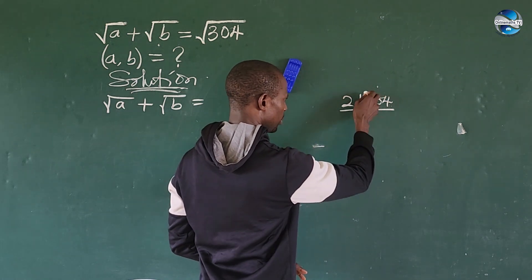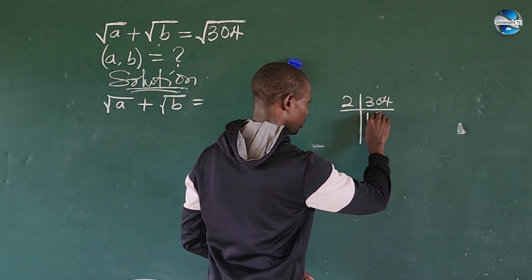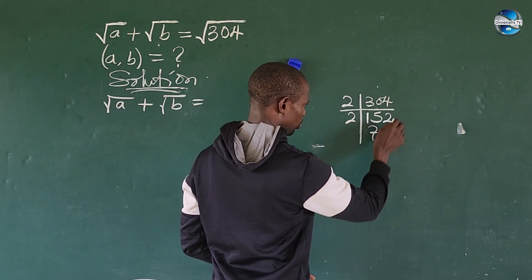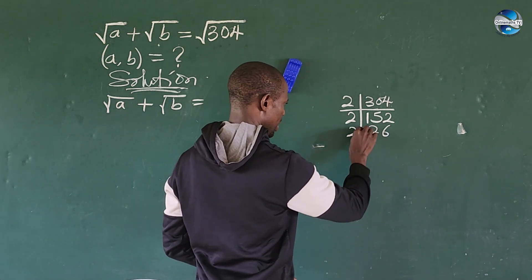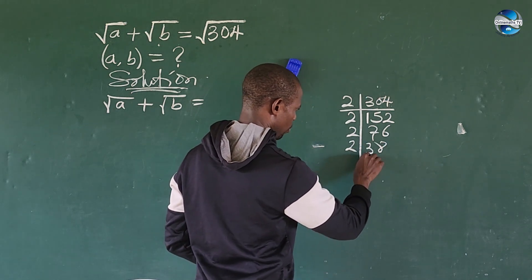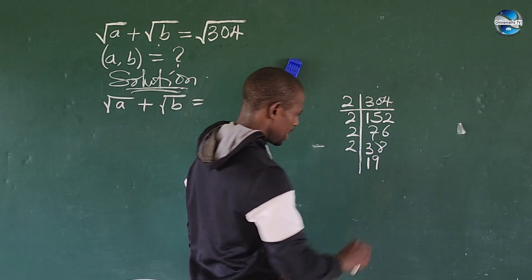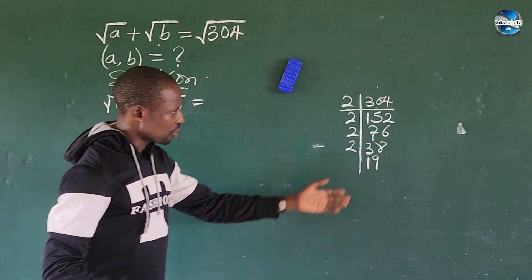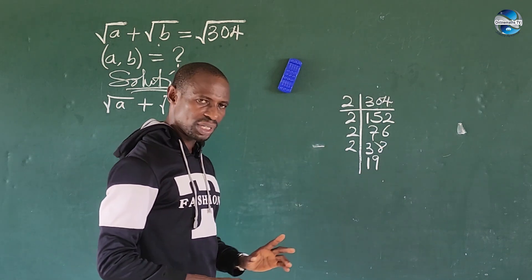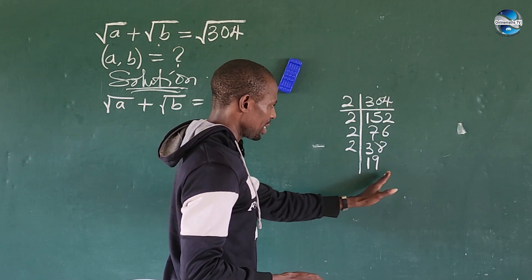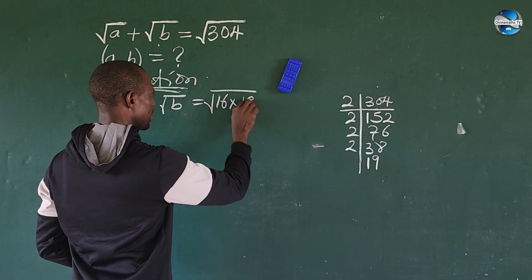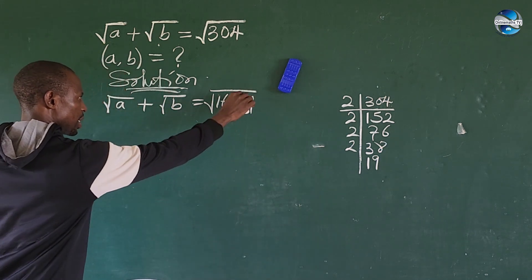We keep dividing 304 by 2 repeatedly: 2 into 152 gives 76, 2 into 76 gives 38, 2 into 38 gives 19 — and nothing more can divide into 19. So we multiply out the twos: 2 × 2 × 2 × 2 = 16. Therefore 304 = 16 × 19, and we can rewrite the right-hand side as the square root of 16 times 19.